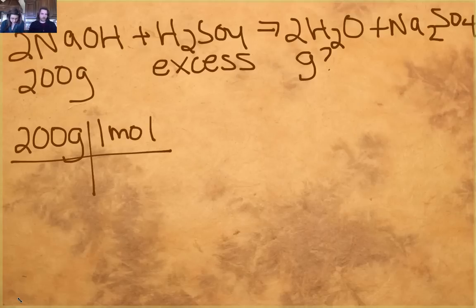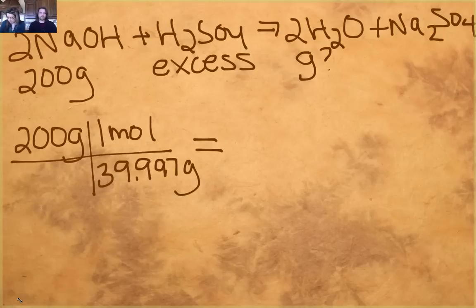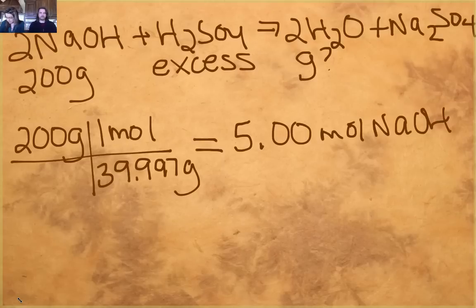So if I'm starting with 200 grams of sodium hydroxide, I want to know how many grams of water you're going to make. So first we're going to do grams of sodium hydroxide to moles of sodium hydroxide. So to go from grams to moles, we divide by molar mass. I was waiting for you to call on me, but okay. So what is the molar mass of sodium hydroxide? 39.997 grams. Okay. And 200 divided by about 40 is about 5.00. We're using our significant figures. Okay, so five moles of sodium hydroxide.